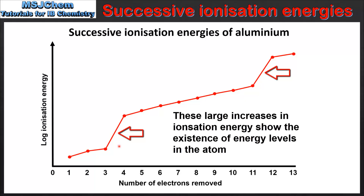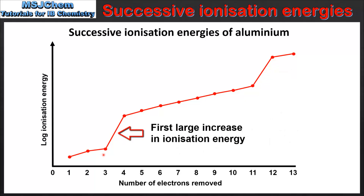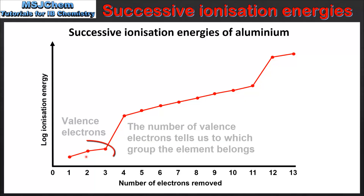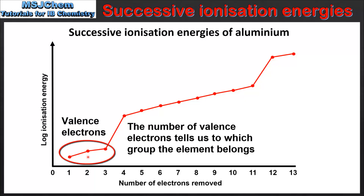We also see 2 large increases in ionization energy: between the 3rd and 4th ionizations, and the 11th and 12th. These large increases show the existence of energy levels in the atom. The first large increase also helps us determine to which group the element belongs. For aluminium the first large increase is between the 3rd and 4th ionizations, occurring after the 3 valence electrons are removed. Aluminium has 3 valence electrons, therefore it's located in group 13 of the periodic table.